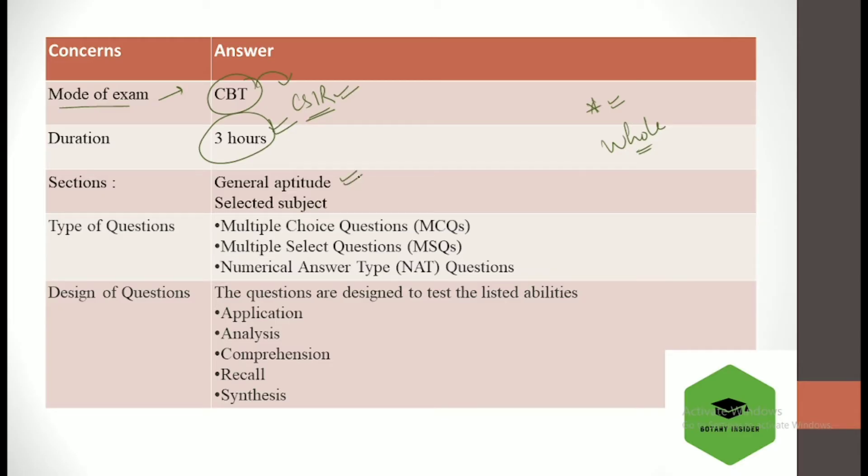Now talking about the sections, there are two main sections in the examination. The first one is the general aptitude in which we get questions related to mathematical areas, and the second one is the subject related. For example, if you are preparing for the GATE XL exam, that means you are targeting the life sciences subject. In that, we also have some divisions, we'll discuss each one of them.